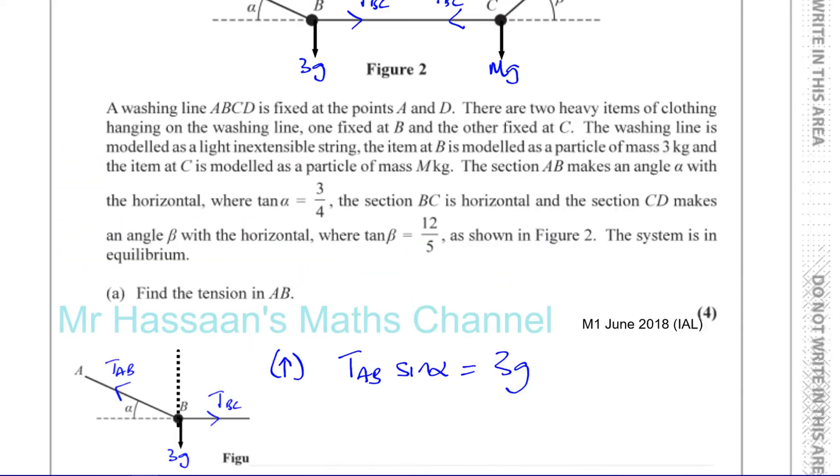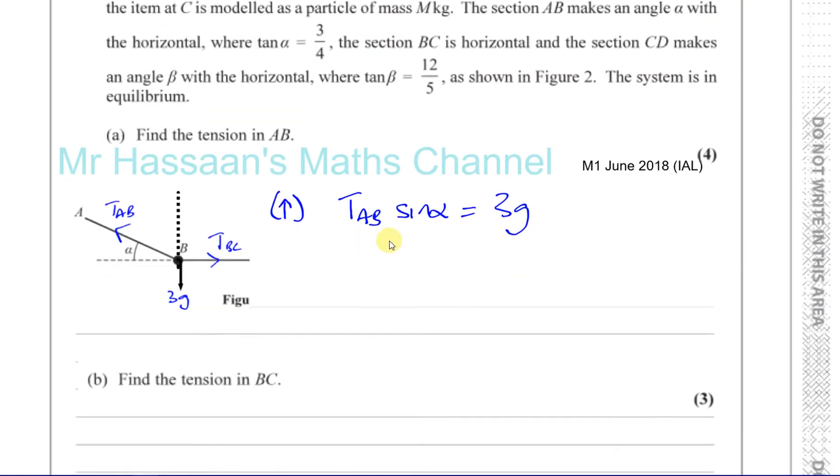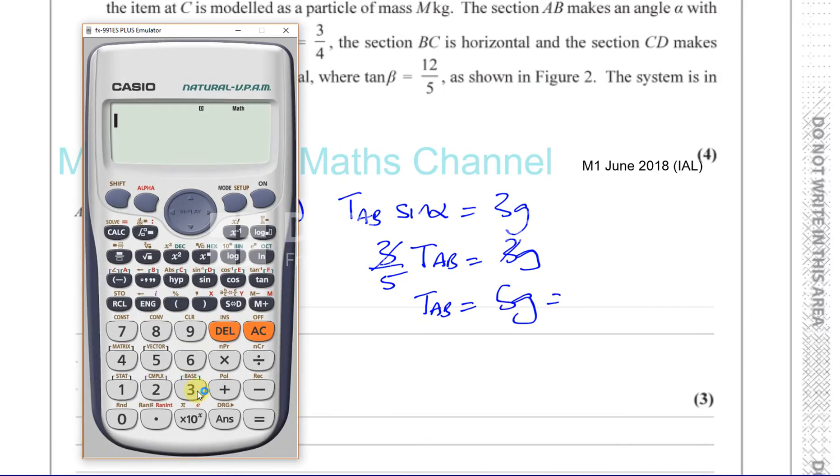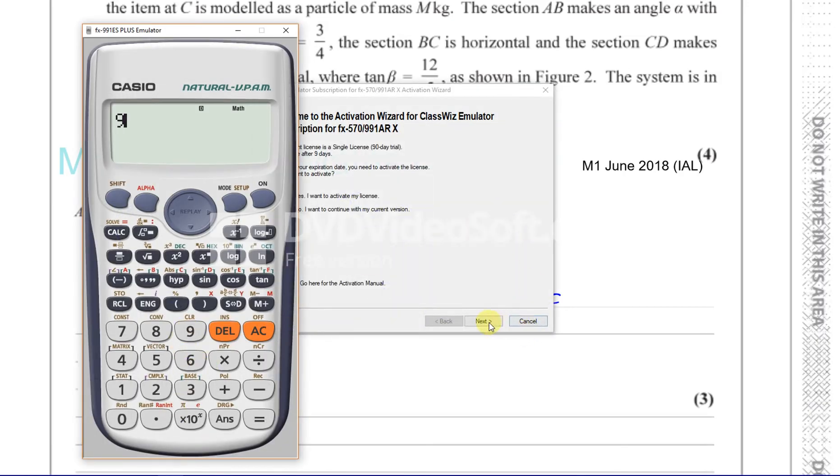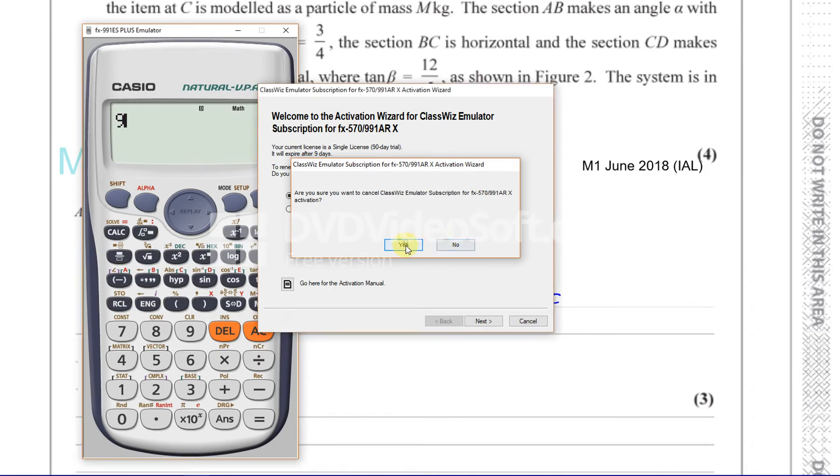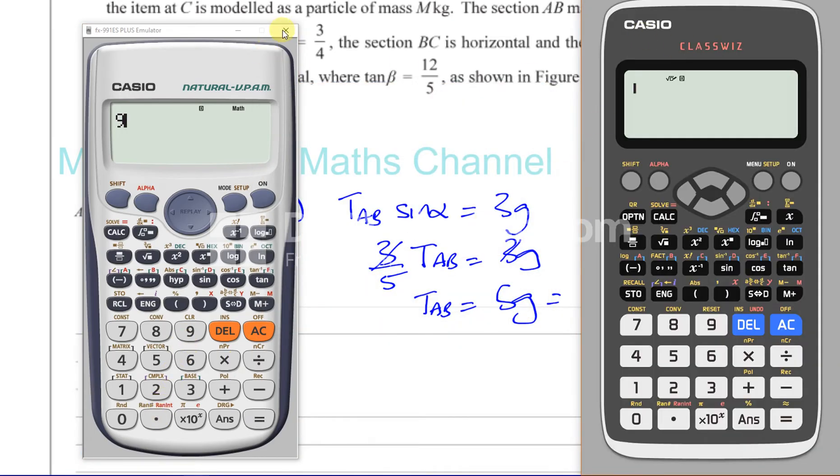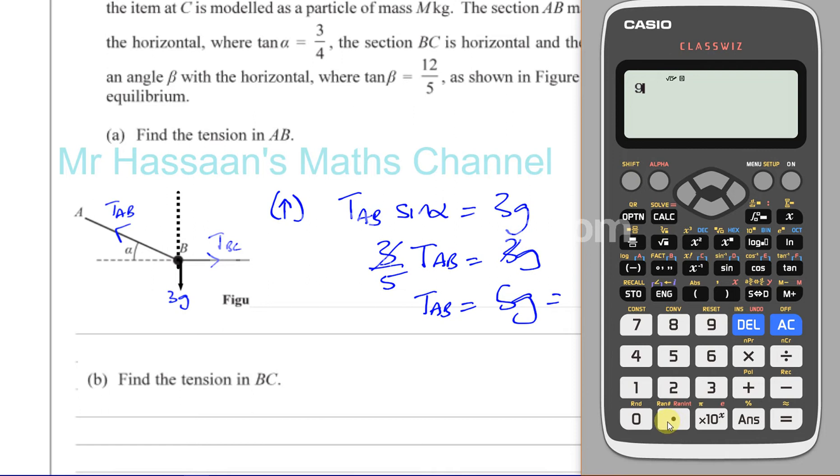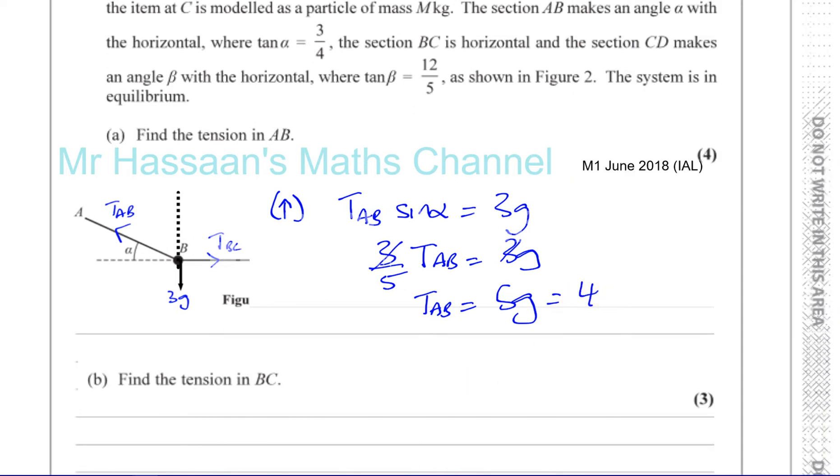So sine of alpha was the three-fifths. So you have three-fifths times tension in AB is equal to 3 G Newtons. The threes cancel. Multiply both by five. So the tension in AB is going to be 5 G Newtons, which in terms of, we'll just use 9.8. 9.8 times 5. That gives us 49 Newtons. That's the tension in AB.